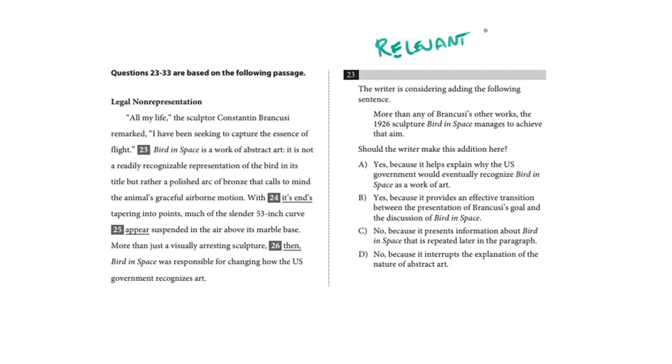Okay, so what we're looking at here is called a relevant information question. You will see between two and four of these on your exam, and you can identify them because they usually start like this, by saying that the writer is considering adding the following sentence, and then should the writer make this addition here. You are being asked two questions.